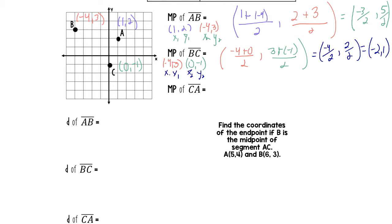Let's plot these points just so we can see what it looks like. Negative one and a half for the midpoint of AB, and then two and a half — so this is the midpoint of AB. The midpoint of BC is at (-2, 1). So if you look from B to the midpoint and then C to the midpoint, that looks like it could stand up.